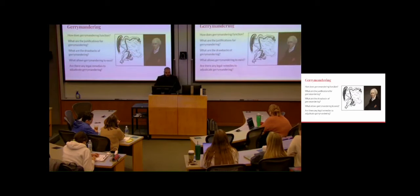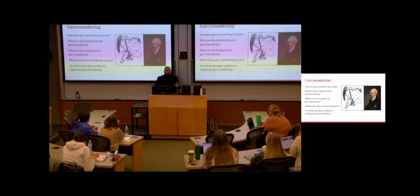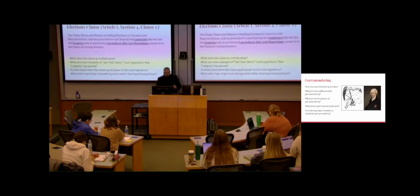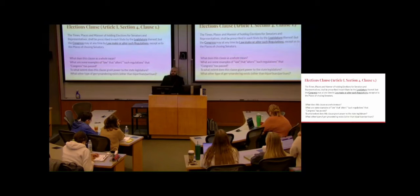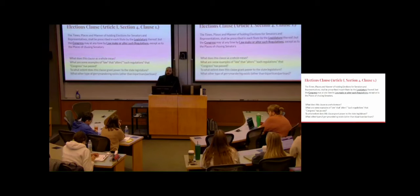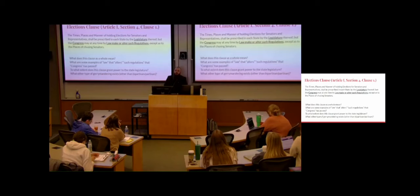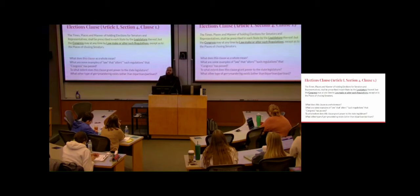So what allows gerrymandering to exist? What's the legal function of how it exists? This is the Elections Clause in the Constitution — Article 1, Section 4, Clause 1. It says the times, places, and manners of holding elections for senators and representatives shall be prescribed in each state by the legislature thereof, but Congress may at any time by law make or alter such regulations except as to the places of choosing senators. Does anyone have any idea what this means?